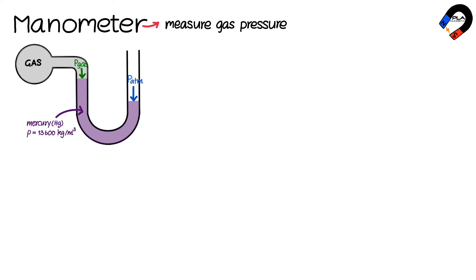while the atmospheric pressure pushes downward on the mercury level on the right-hand side. If the mercury level is higher on the left-hand side than on the right-hand side by a height h millimeters, it indicates that the gas pressure is lower than the atmospheric pressure by h millimeters of mercury.